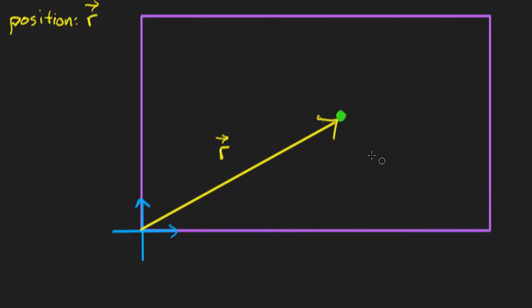Returning to this picture, the robot is over here and I'm representing its position by a vector. I'm calling the position vector R — it's common to call a position vector R — and since it's a vector I'm putting an arrow over it. This is my position vector, and since the robot is moving, here's its position at one specific time T zero.